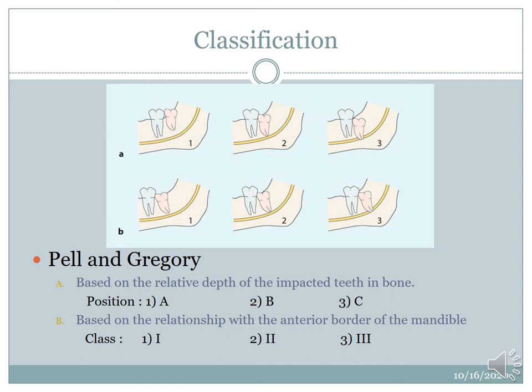This classification gives an idea about the difficulty as well. Class 2 and position C will be the most difficult to extract because it is more deeply placed and there is not enough space for access.